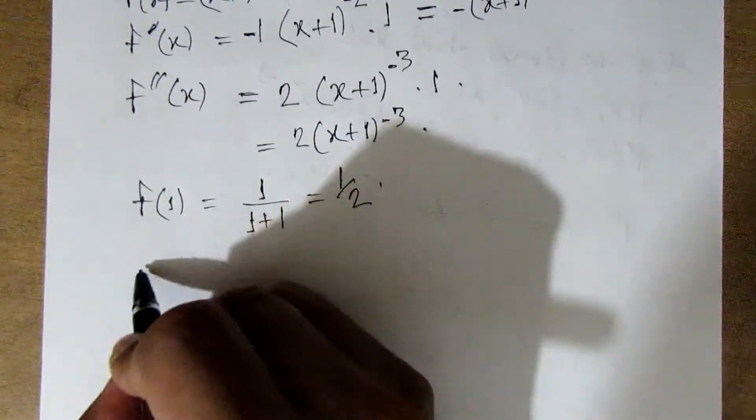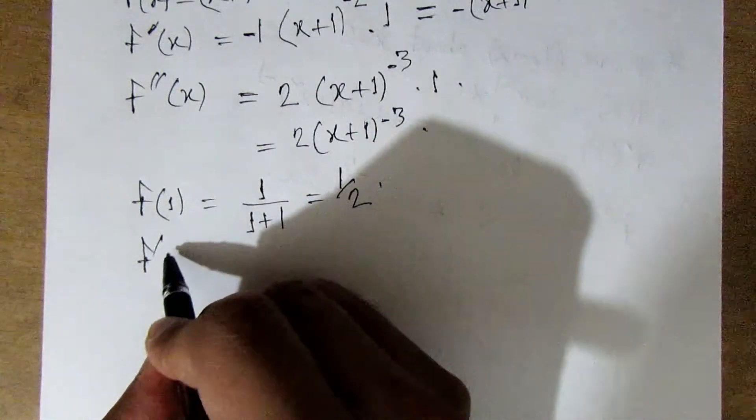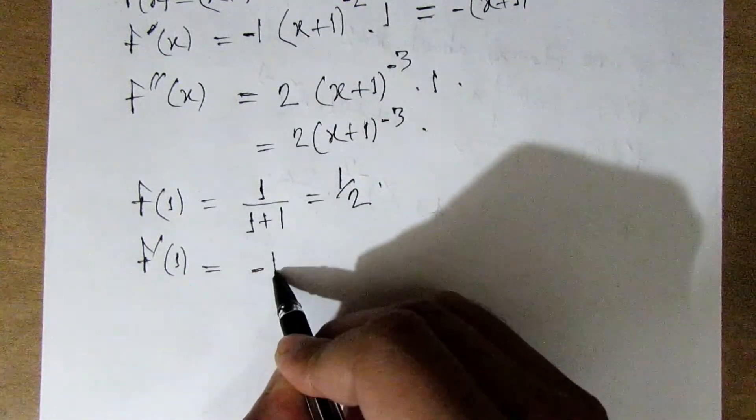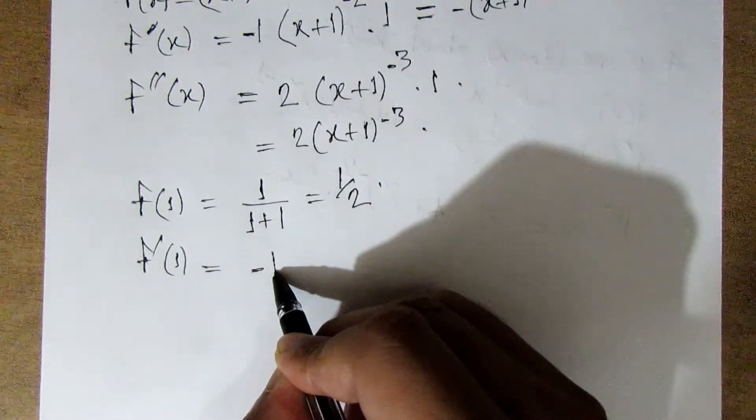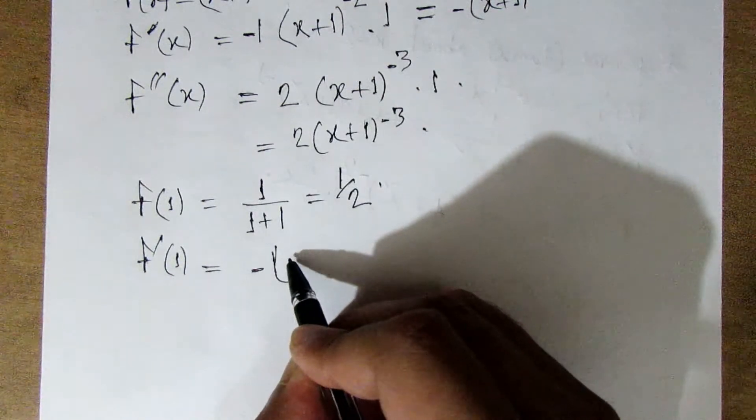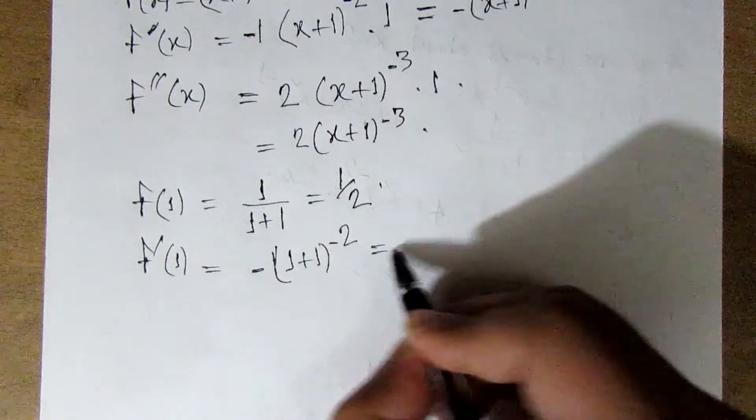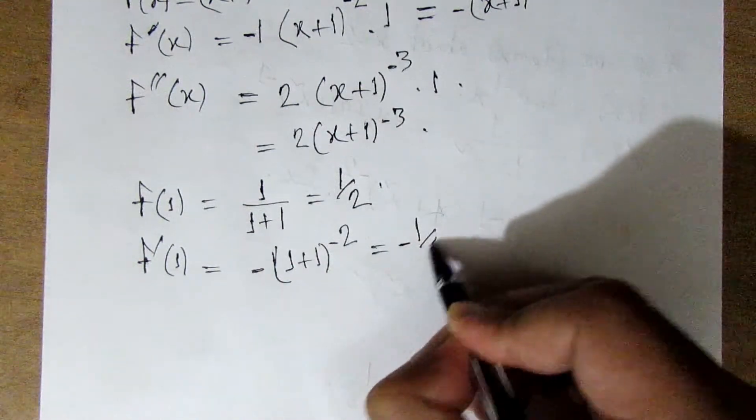f prime of 1 equals minus 1 plus 1 to the minus 2, so it equals minus 1 by 4.